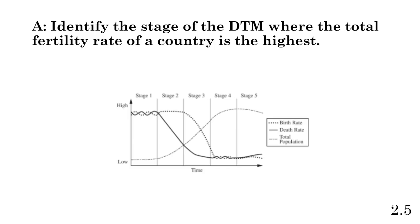Part A is an identify, so you answer with one sentence. Identify the stage of the DTM where the total fertility rate of a country is the highest. We're looking at birth rates — which stage has the highest birth rates? That's going to be Stage 1. Stage 1 of the demographic transition model is where the total fertility rate is going to be the highest. In Stage 2, the birth rate may be slightly lower. In Stage 3, it drops exponentially, and in Stages 4 and 5 it stays at a more static rate.